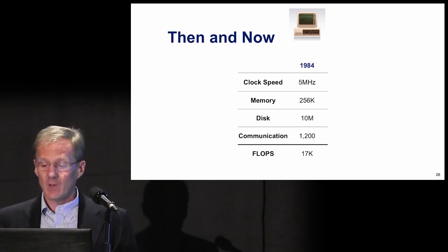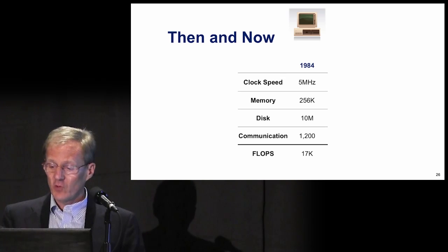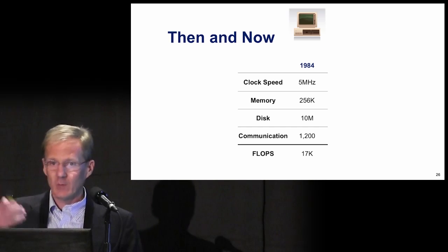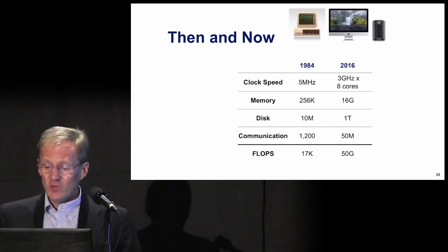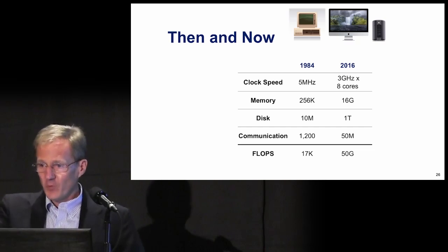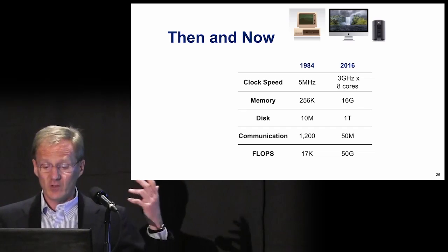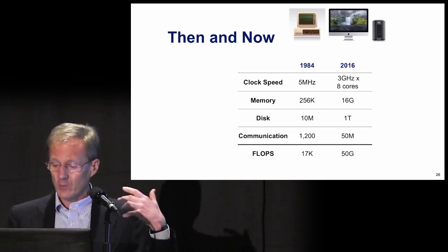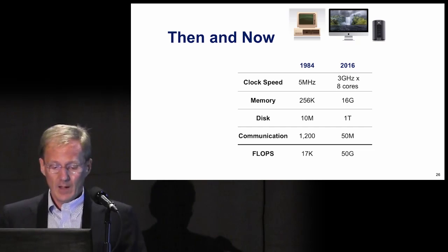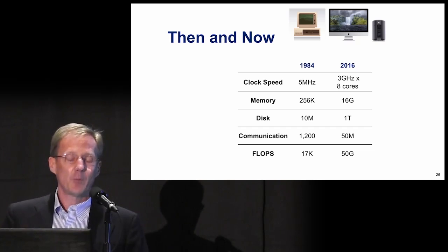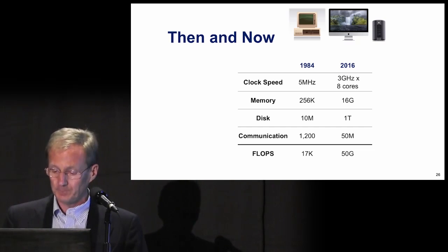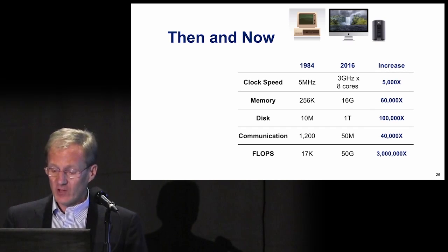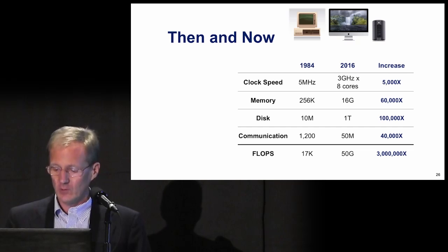From 1984 to today, a most wonderful thing happened. This table shows the specs for a standard PC in 1984 and here they are today. The increases in performance are astonishing — 60,000 times more memory, 100,000 times larger disk storage. Flops — floating point operations per second — the speed of a matrix multiply in MATLAB — has grown from 17 kiloflops to 50 billion flops. That's an incredible three million times faster. This amazing increase has been transformational in making software for computer-aided control system design, enabling larger-scale design, analysis, and modeling right at your fingertips on your desktop.